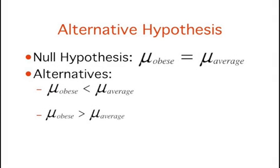If the null hypothesis is rejected, then the alternative to the null hypothesis, called the alternative hypothesis, is supported. The alternative hypothesis is simply the reverse of the null hypothesis. If the null hypothesis that the population mean for obese patients is equal to the population mean for average weight patients is rejected, then there are two alternatives.